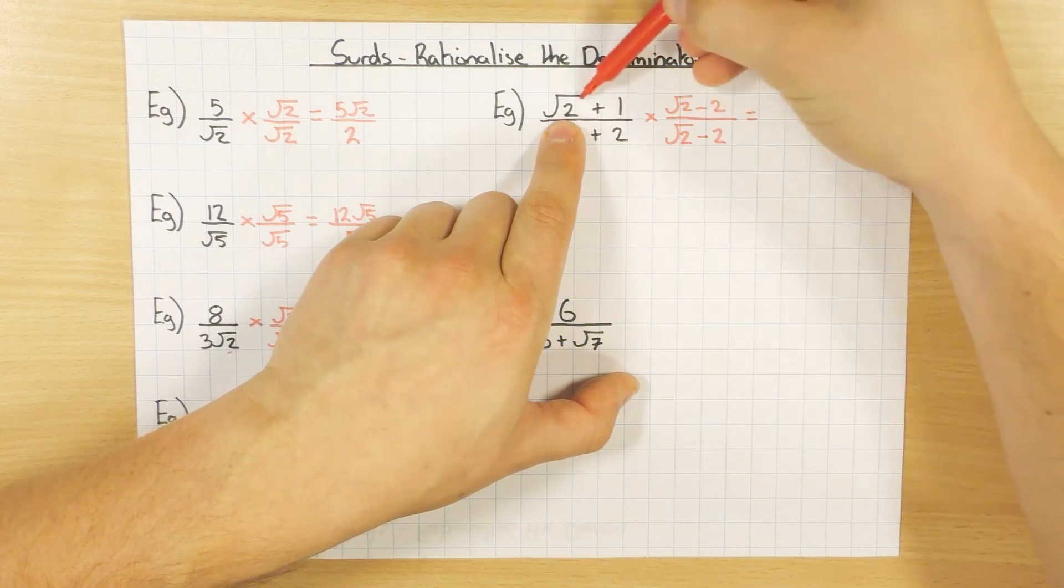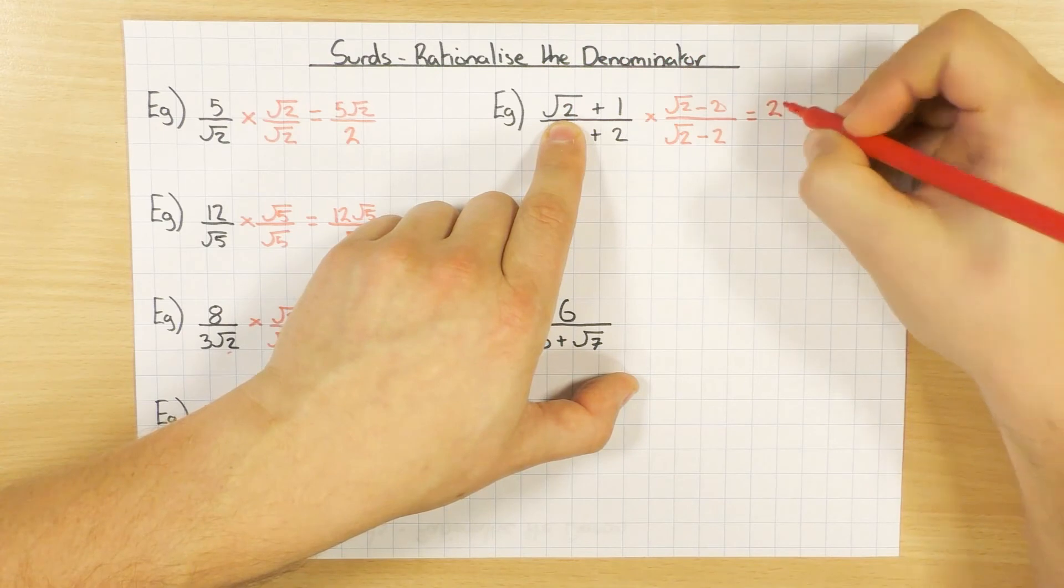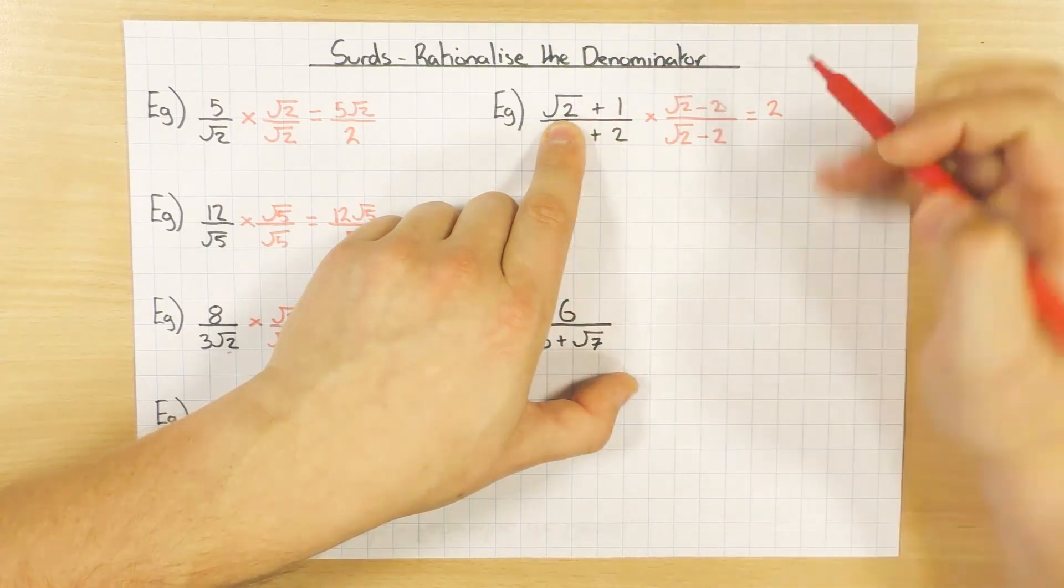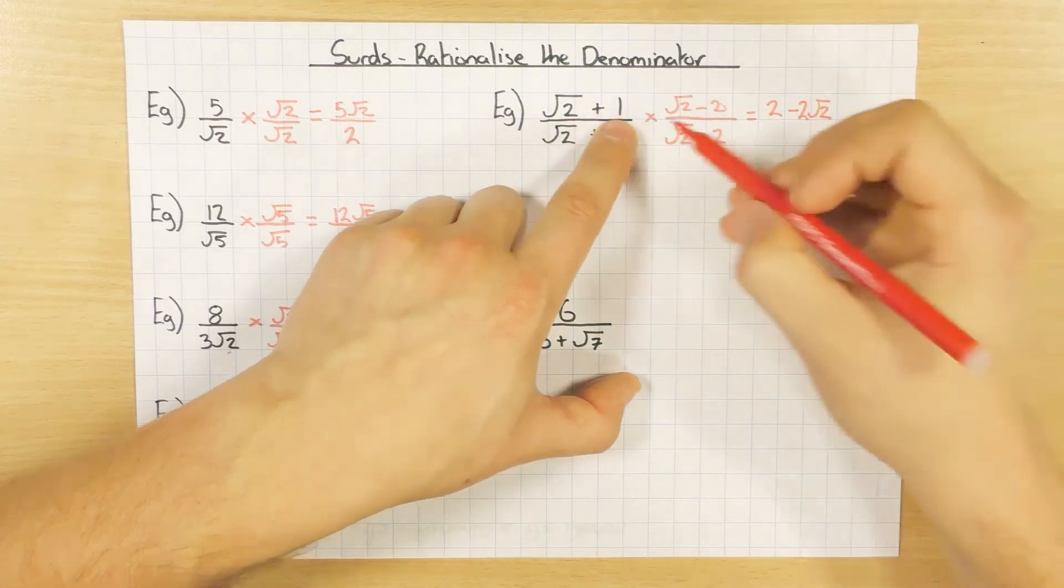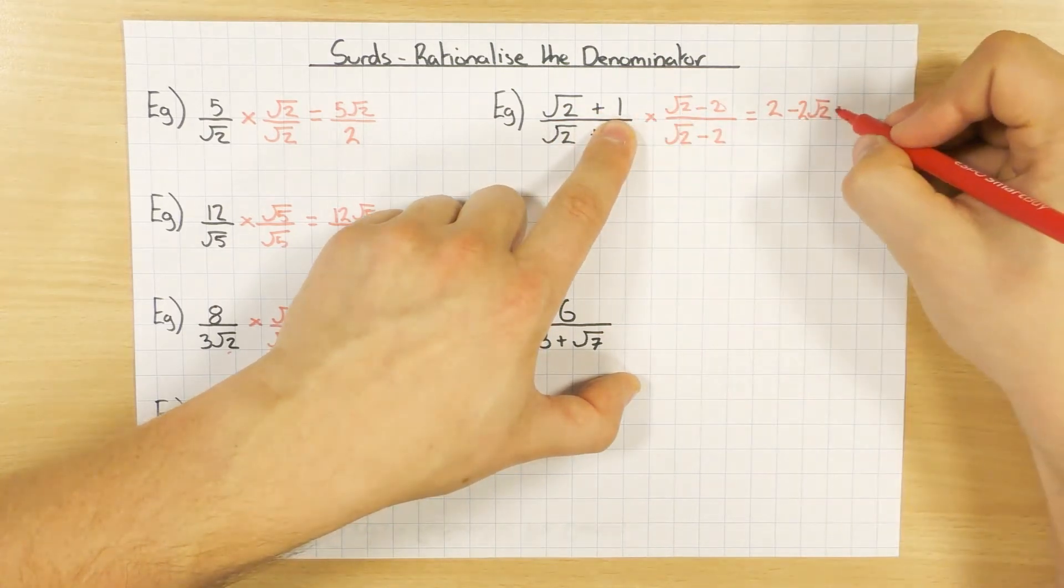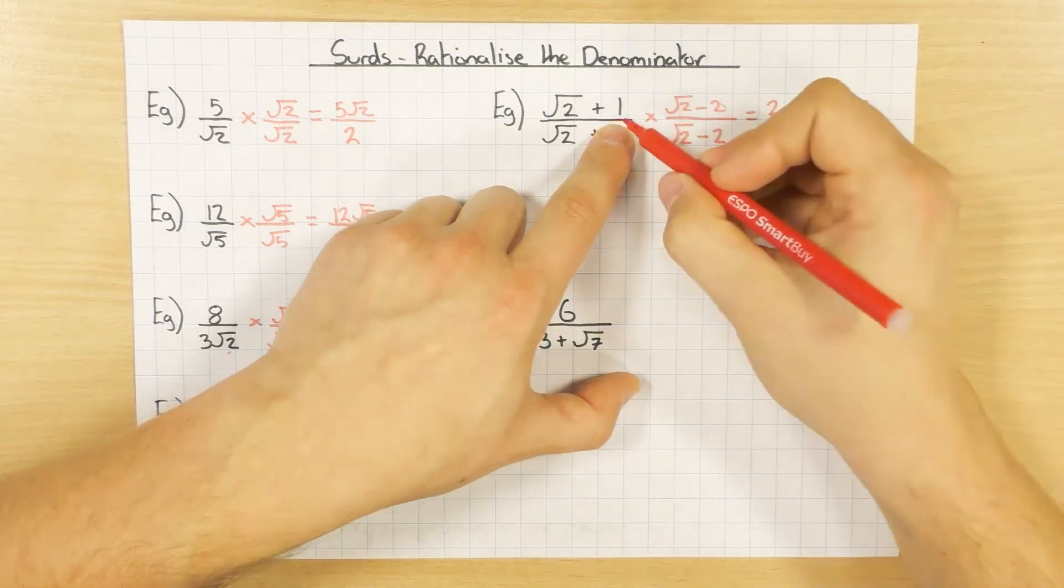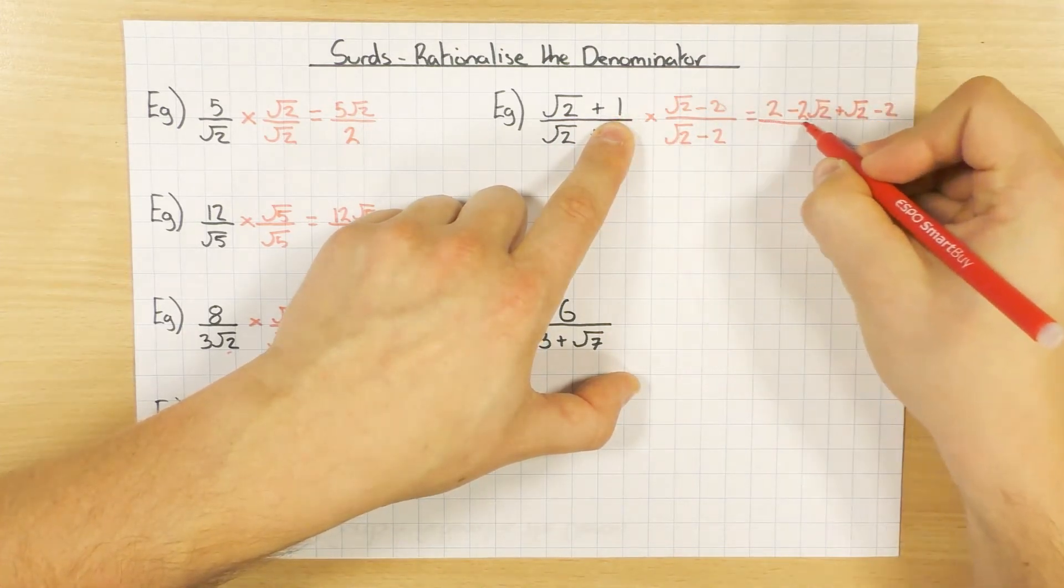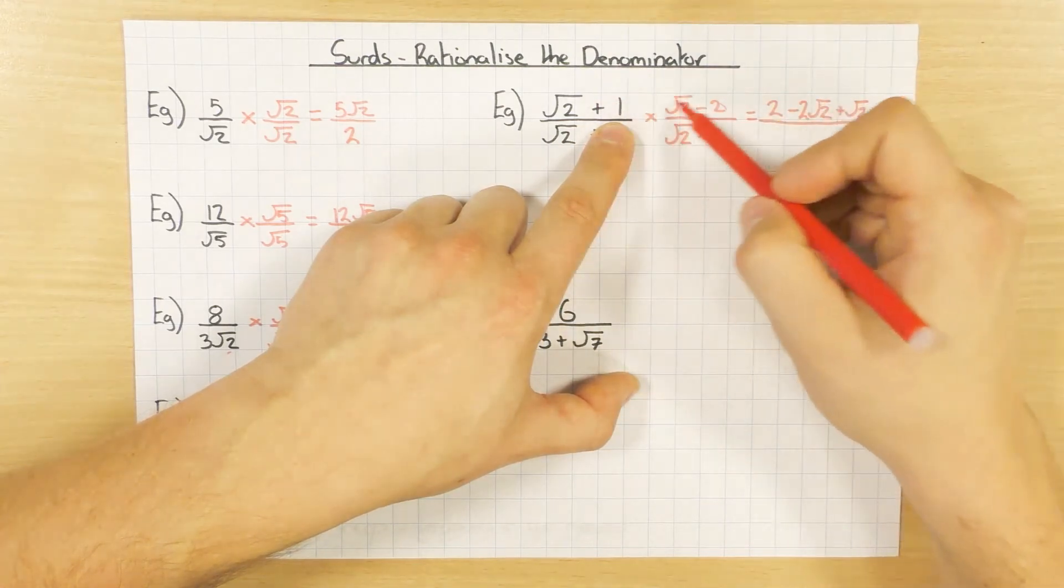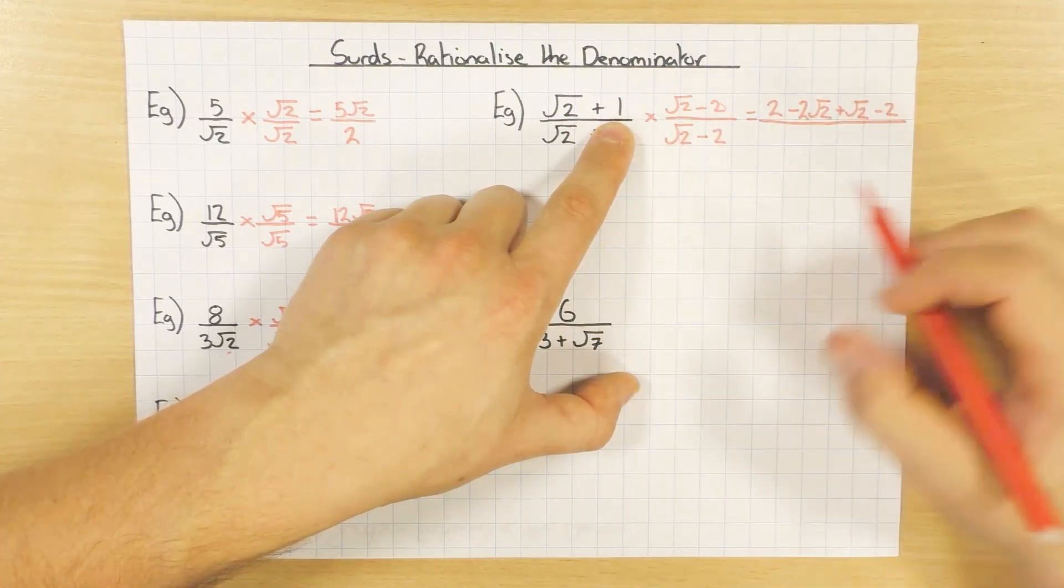So I need to multiply this by this. So root 2 times root 2 is 2. Root 2 times minus 2 is minus 2 root 2. 1 times root 2 is plus root 2. And then 1 times minus 2 is minus 2. So that's the top done. If you want to use a grid to do that, by all means do so, but I haven't got enough space here.